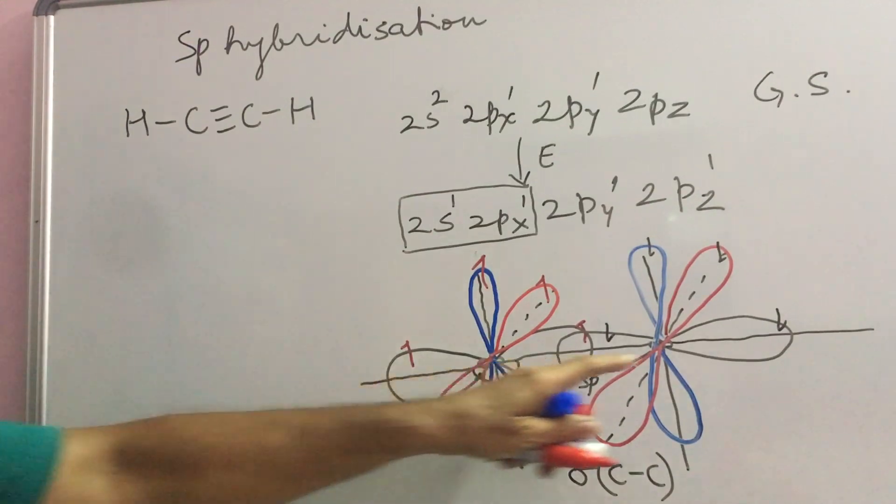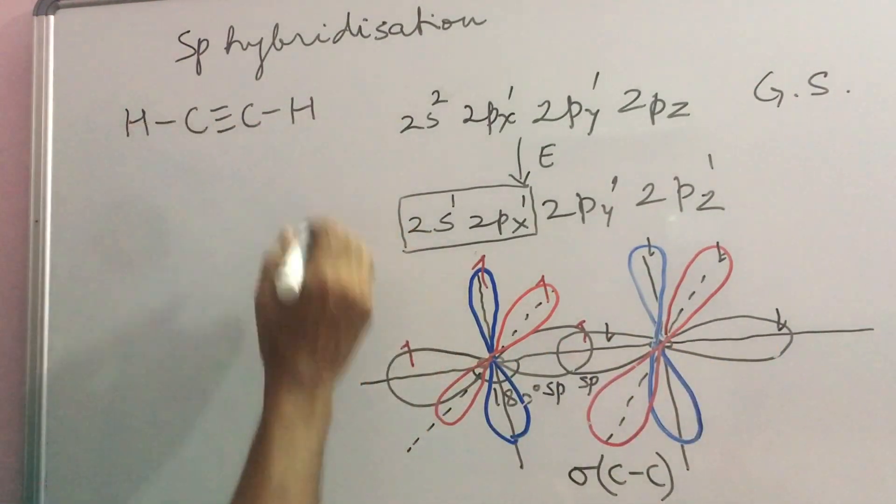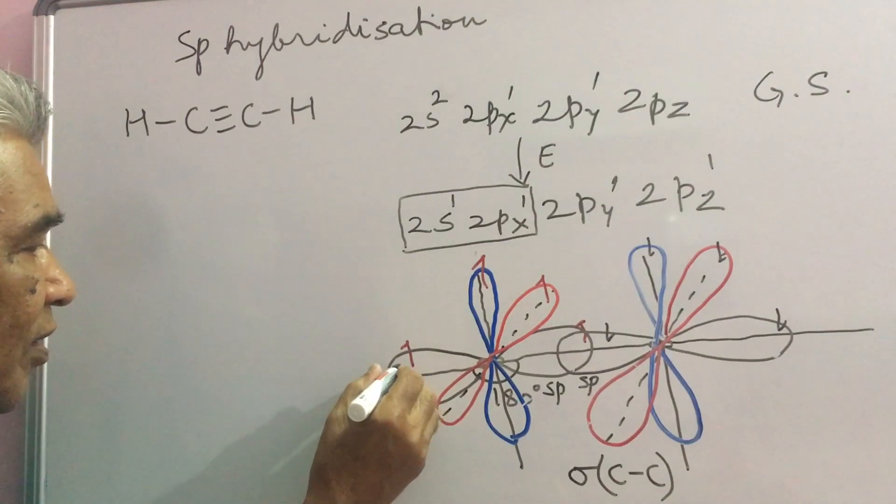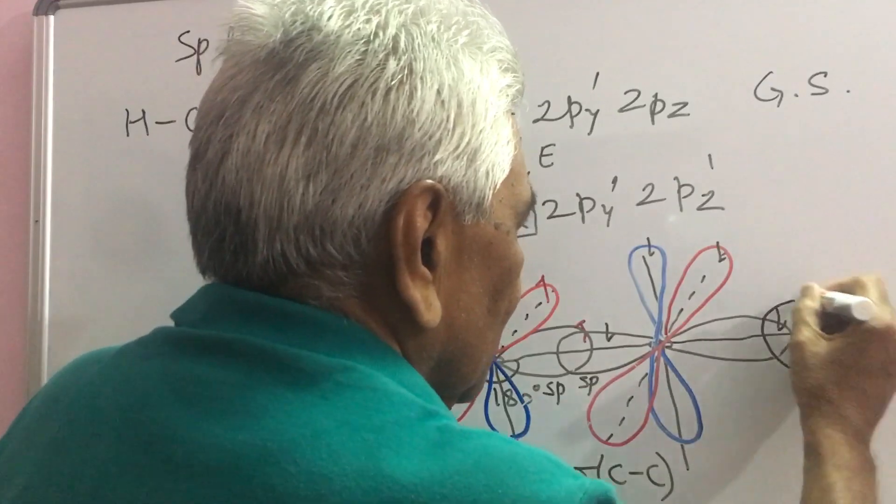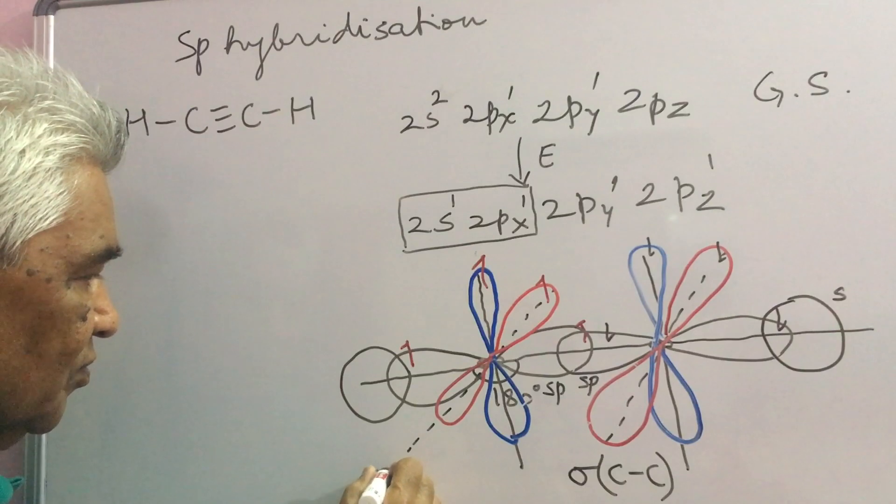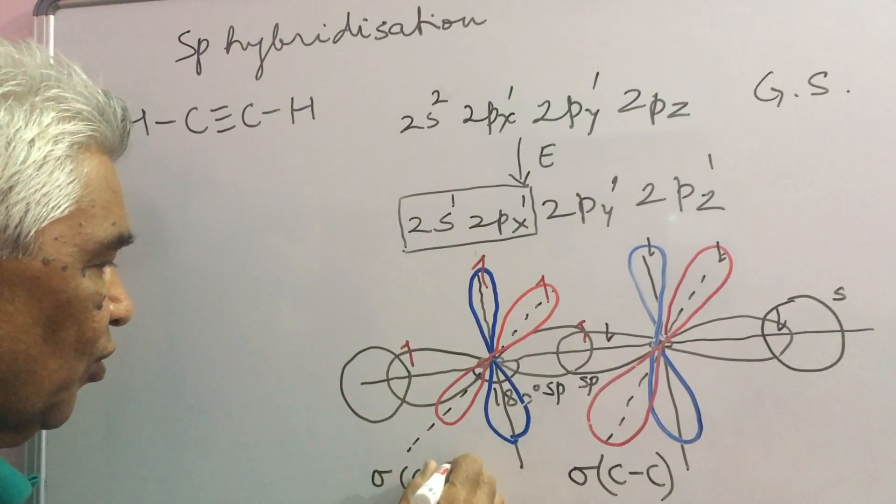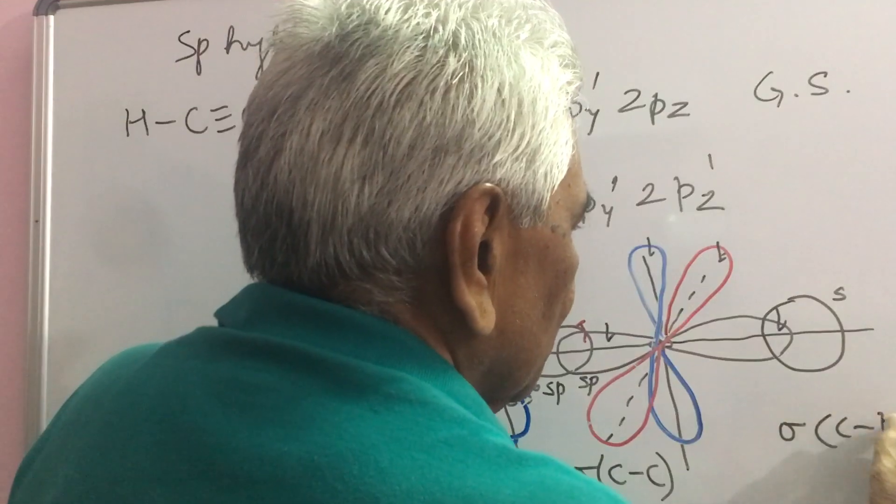These SP orbitals overlap with S-orbitals of hydrogen, forming sigma-CH bond and sigma-CH bond.